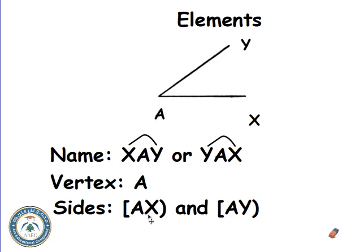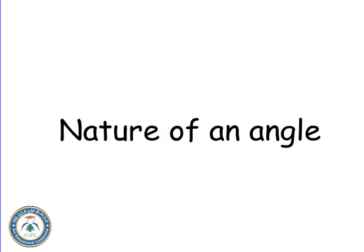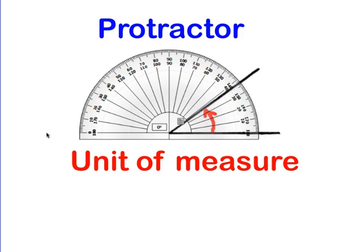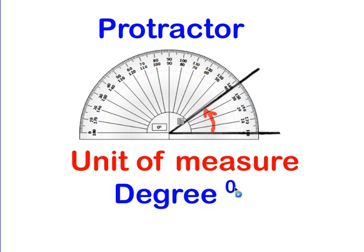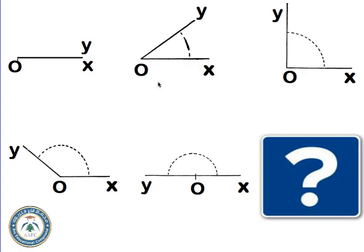We use a protractor to measure an angle — we will go through all the steps in another video. The unit of measure is the degree, symbolized by a small floating circle above the number. For example, 90 degrees is the measure of a right angle.